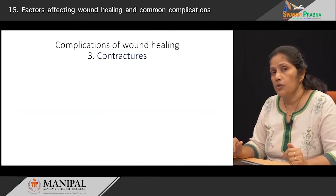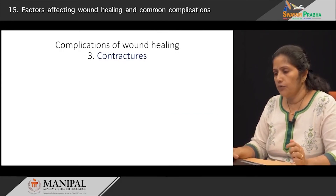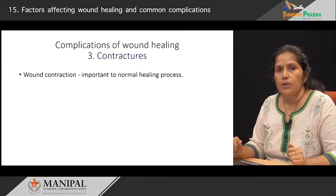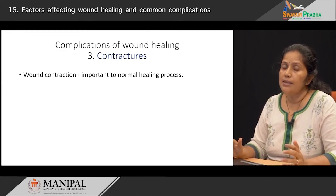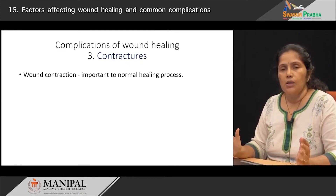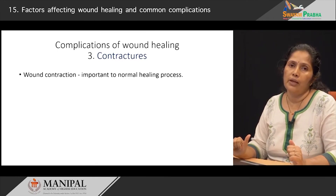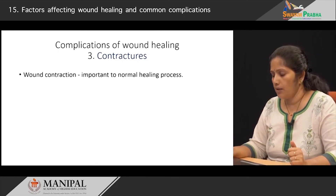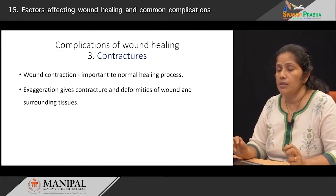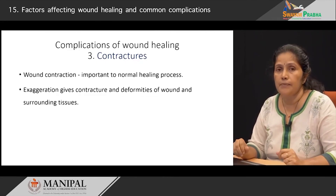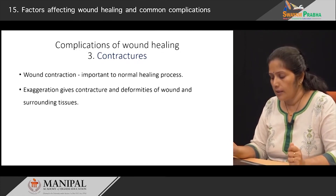Now let us move on to the third complication, which is known as contractures. You have all heard of wound contraction. Wound contraction is a very important normal healing process, especially in healing by secondary intention. When there is a large wound, the myofibroblasts come in and help in wound contraction to reduce the gap of the wound. But sometimes this process becomes very aggressive, and when there is an aggressive proliferation of collagen fibres, it gives rise to contractures and deformities of the wound plus deformities of the surrounding tissues.